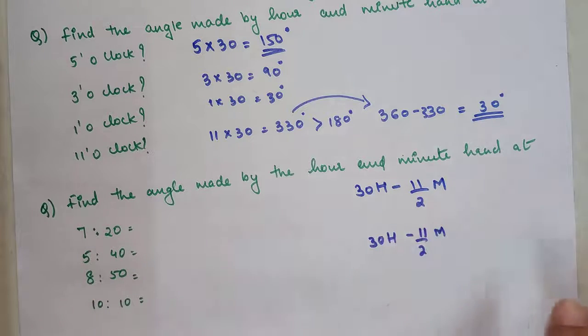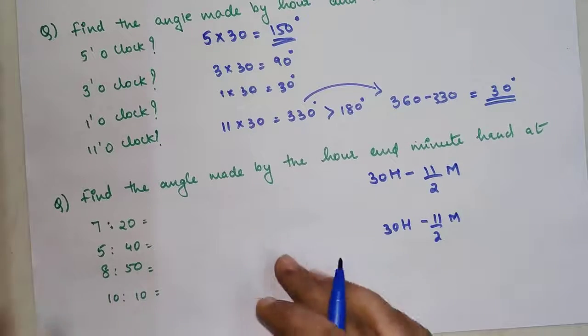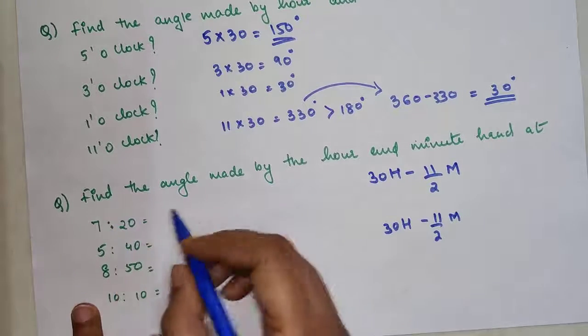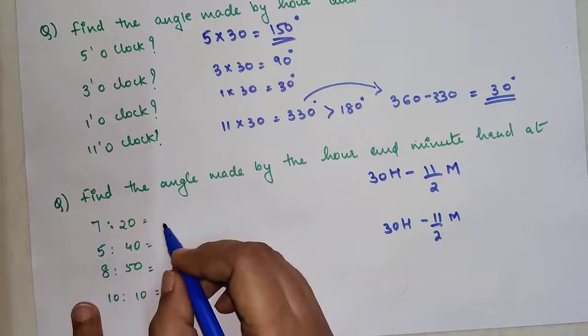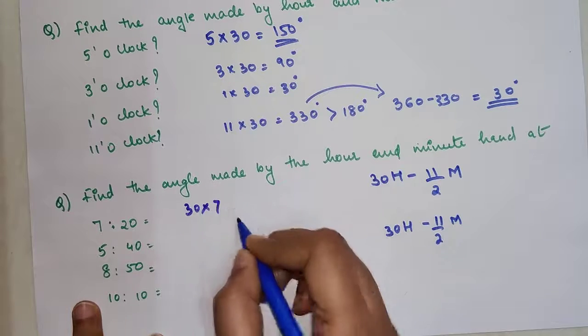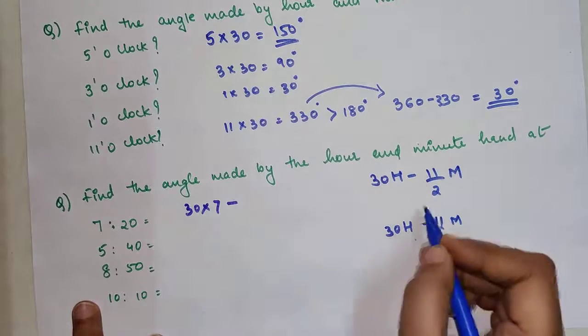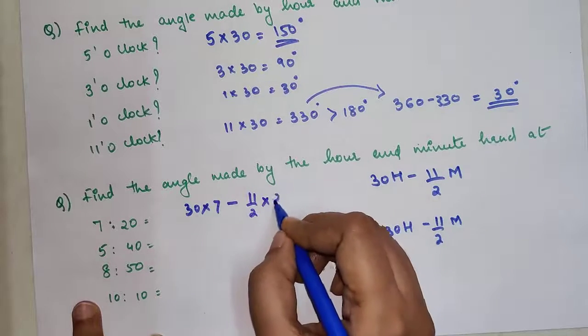So now for this one, what you have over here is 30 into hours. So what is the hour over here? We have 7 hours. So 7, 30 into 7 minus 11 upon 2 into 20.